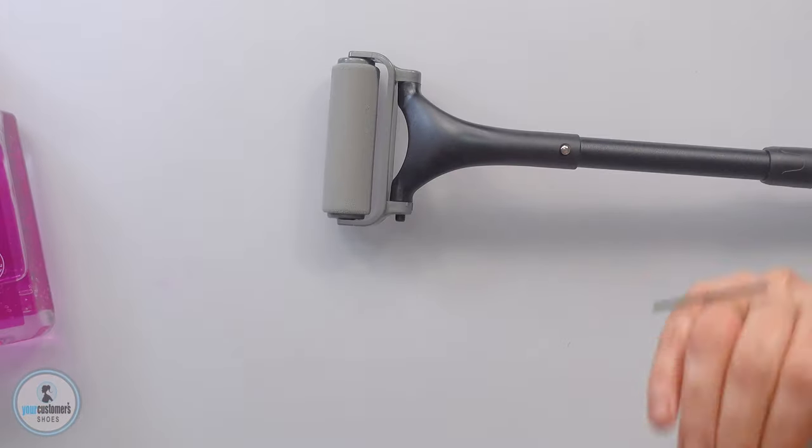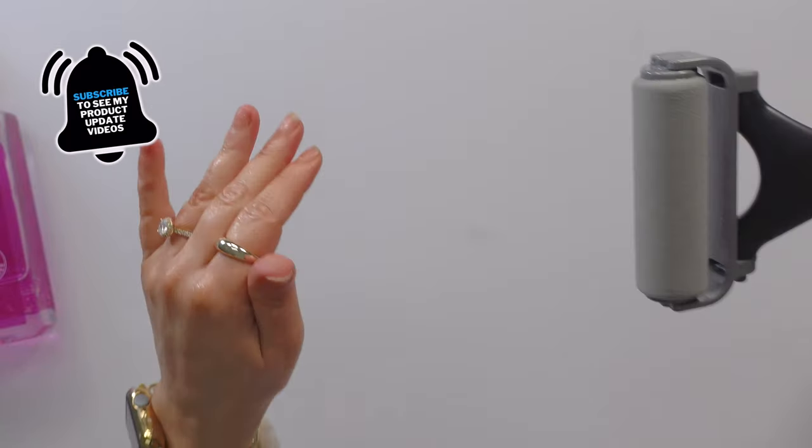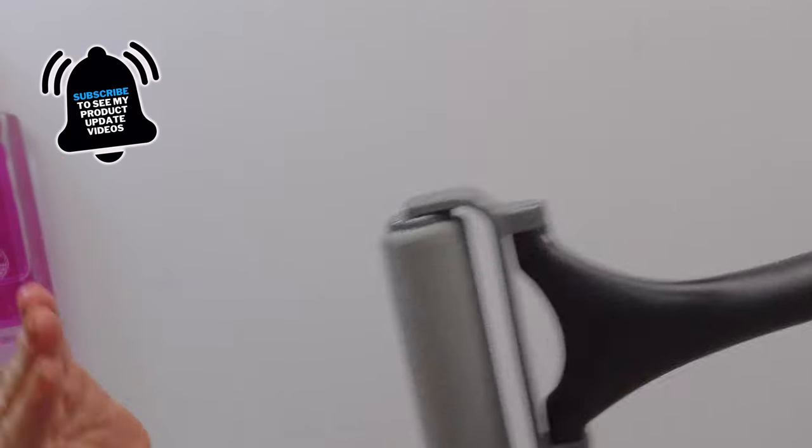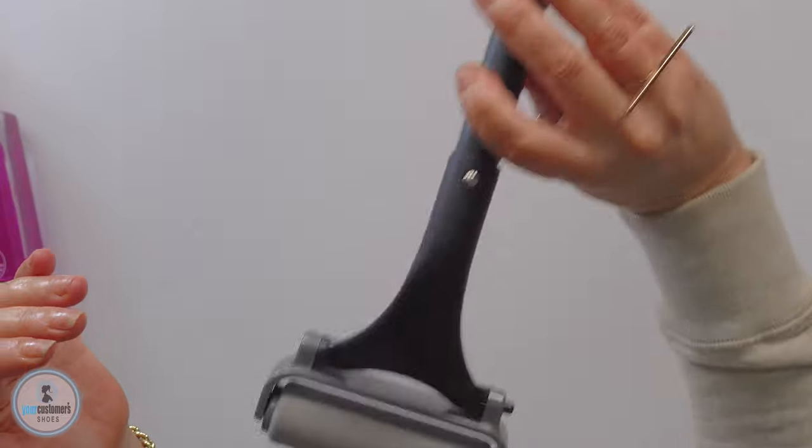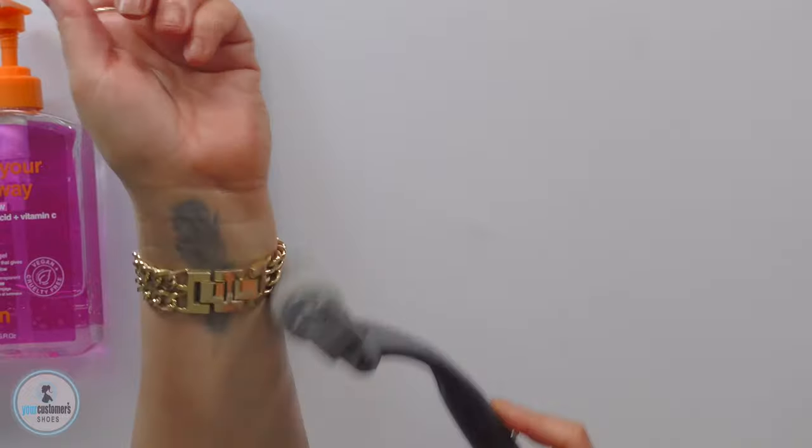But one tip with this: lean forward because it rounds out your back, and then you can kind of go more straight up and down. If it's sunscreen, I'll just put it wherever I'm trying to put it, and then let me tell you...